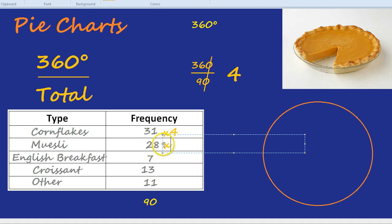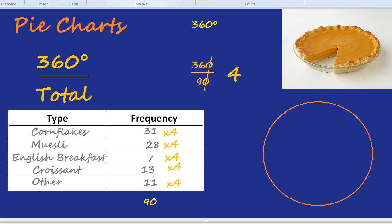For 28, we'd times by 4. For 7, we'd times by 4. Again, for all of them, we'd times by 4. 31 times by 4 is 124. So you'd get your protractor and you'd measure a 124 degree angle, which would be something like that, and you'd label that as cornflakes.